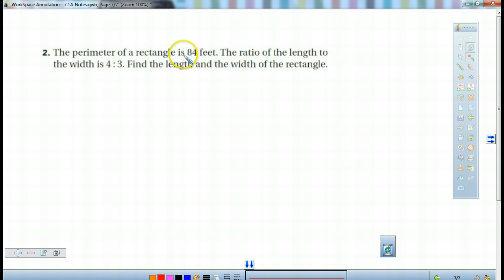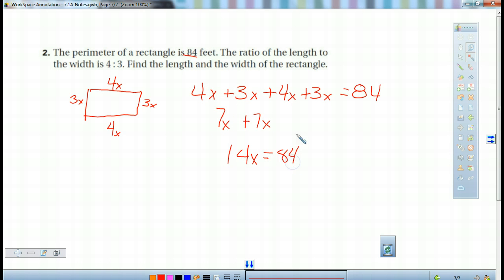Here again, perimeter. I would draw a picture. We've got the length is 4, length is 3. And they're ratios. So 4x and 3x, 4x and 3x. So we add them all together. 4x plus 3x plus 4x plus 3x. That's going to equal our perimeter, which is 84. So 7x plus 7x, I've got 14x equals 84. I've got to divide both sides by 14. So 84 divided by 14 is going to give us 6. So x equals 6.